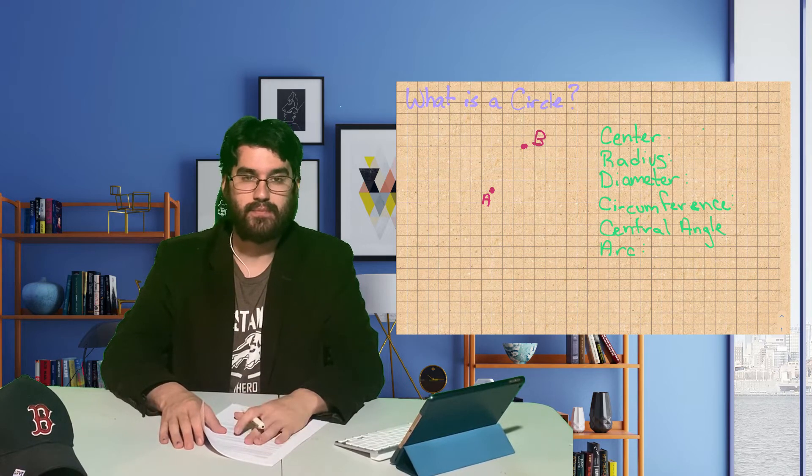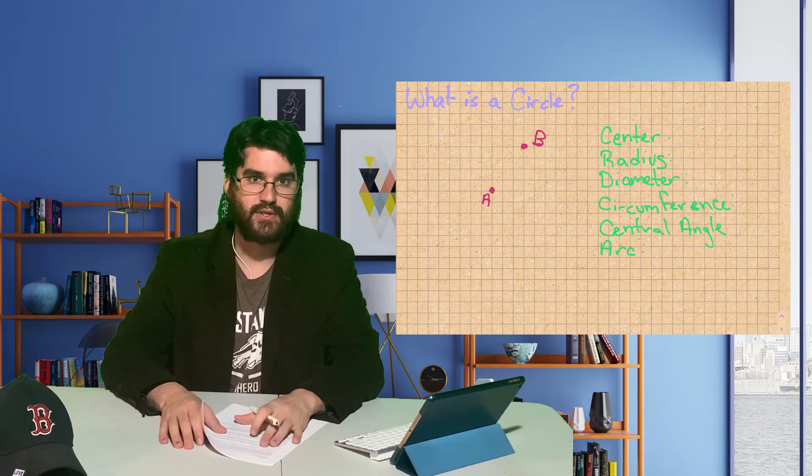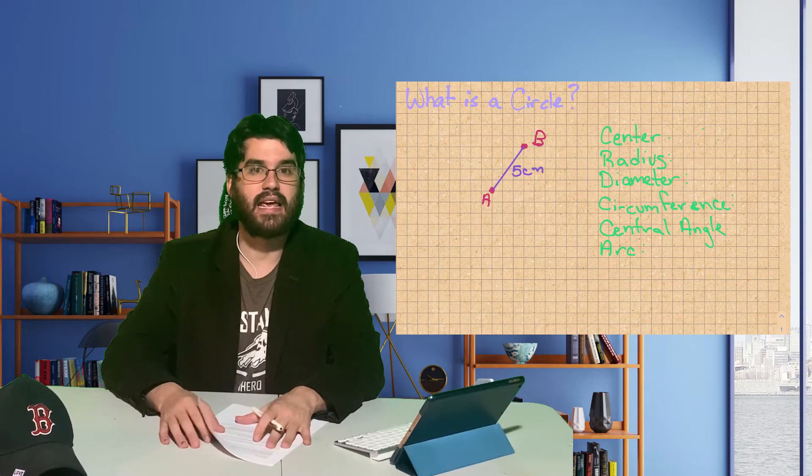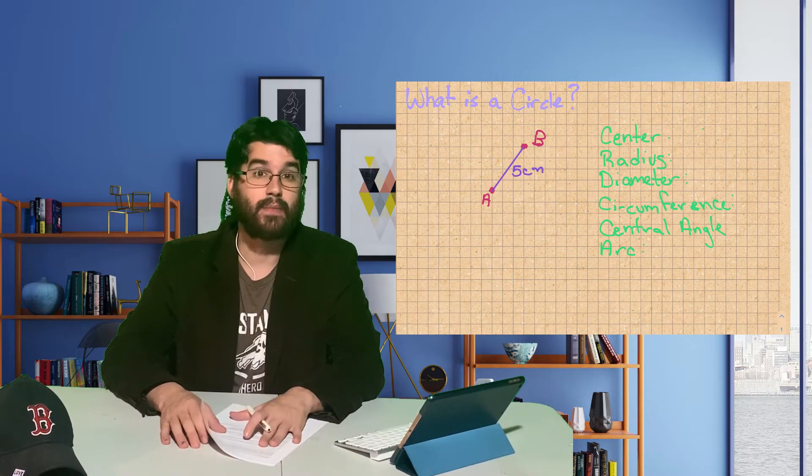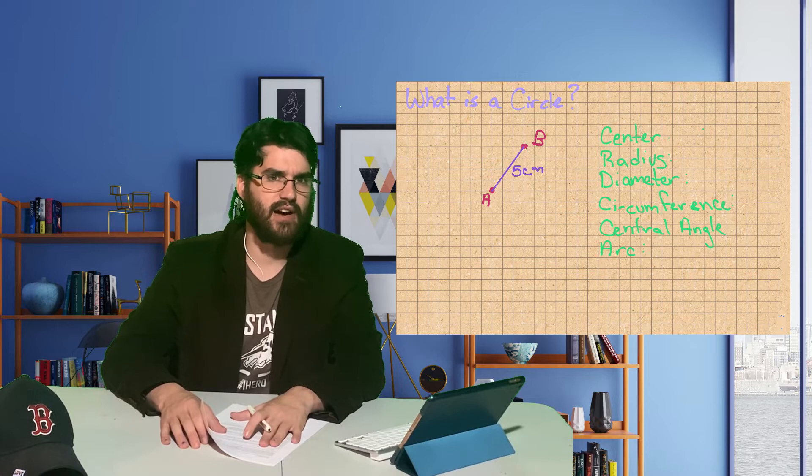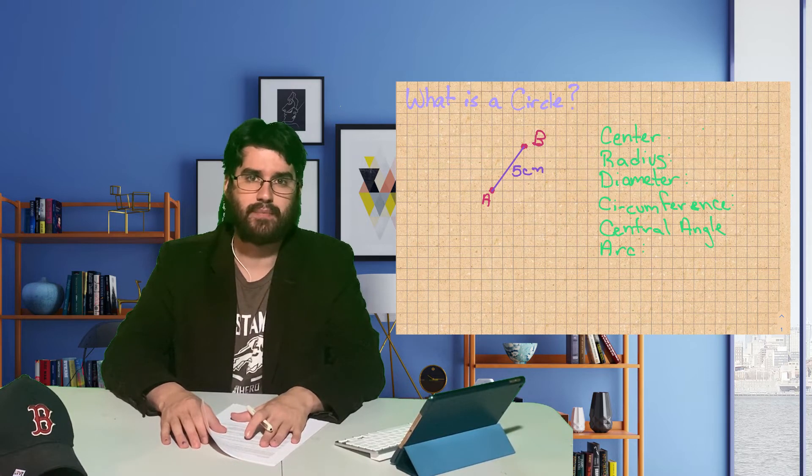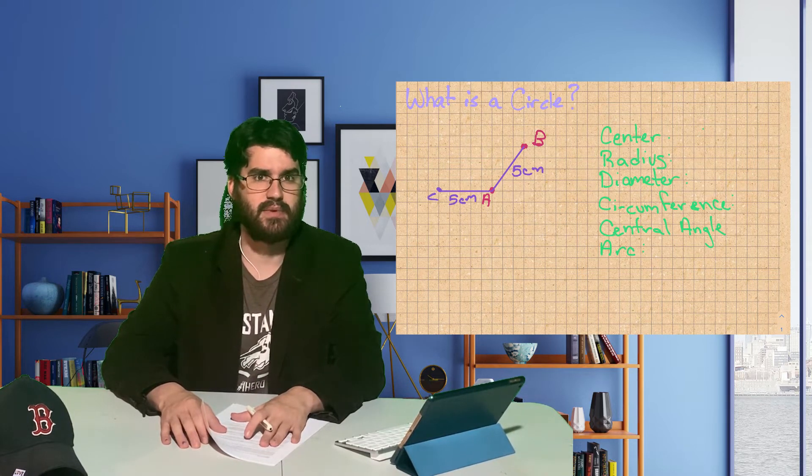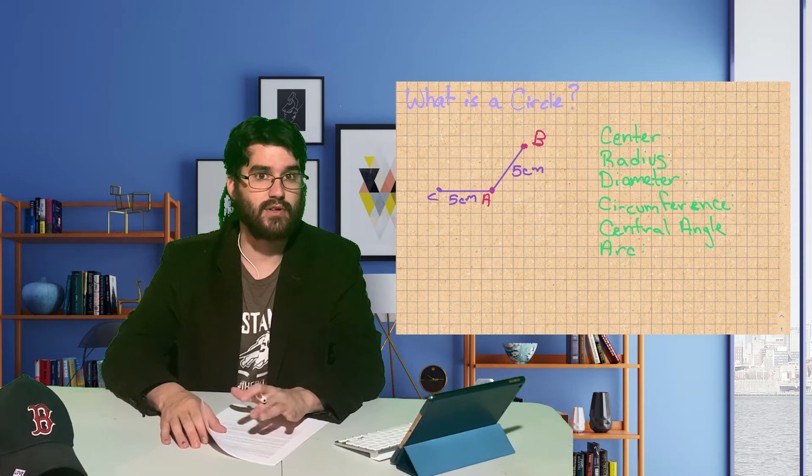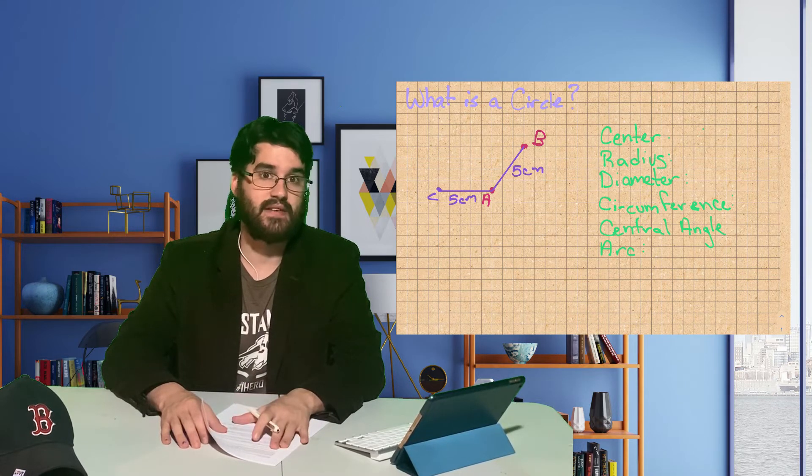We're going to start with points A and B. Point A is 5 centimeters away from point B, so segment AB is 5 centimeters long. I'm going to draw a few more points that are 5 centimeters away from point A. Let's start with point C. I'll draw segment AC, which is 5 centimeters to the left.